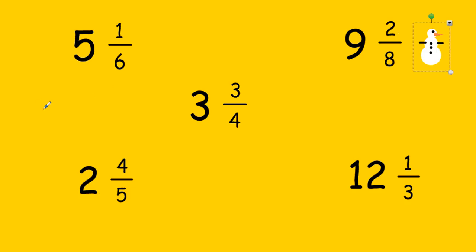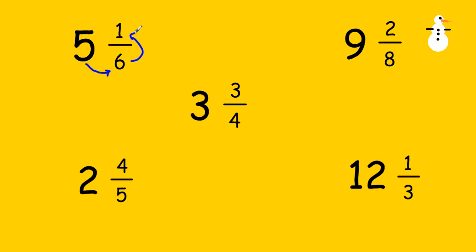Now let's try some on your own. Pause the screen and then unpause it when you're ready to go over the answers. Okay, let's go over them. First problem: five times six is thirty, plus one is thirty-one, and the denominator stays the same — so this would be thirty-one sixths.